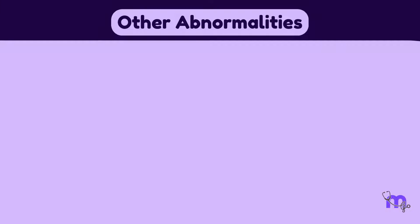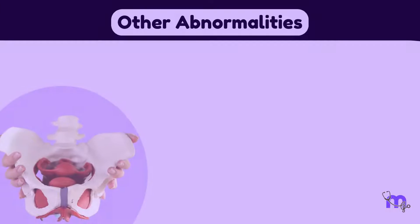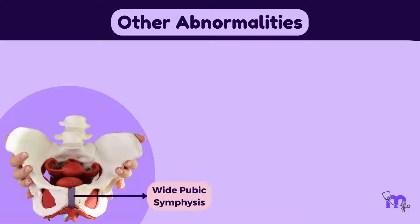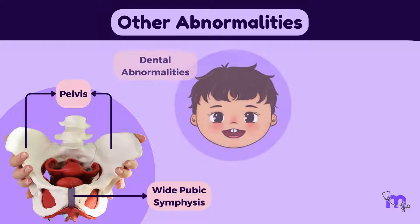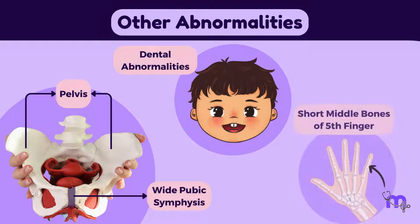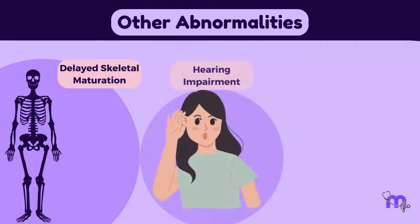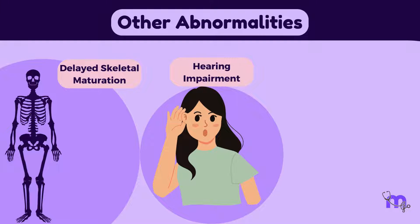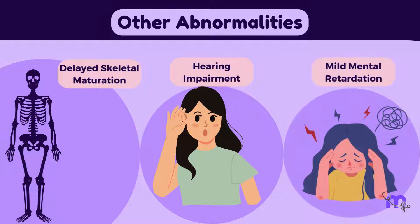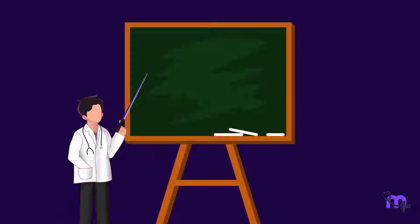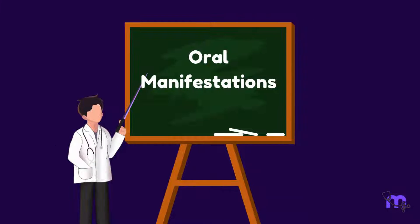There are many other abnormalities seen along with skeletal abnormalities, including wide pubic symphysis, which is the joint between the two halves of the pelvis, dental abnormalities, short middle bones of the fifth finger, delayed skeletal maturation, hearing impairment, and in some cases, mild intellectual disability.